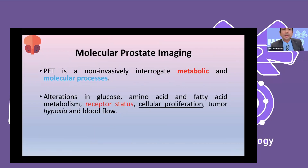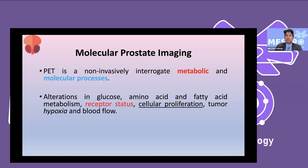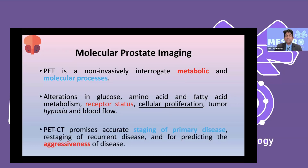Molecular prostate imaging is a non-invasive technique that integrates metabolic and molecular processes. It can exploit alterations in glucose metabolism using FDG, or review amino acid and fatty acid metabolism. Some radiopharmaceuticals reflect receptor status, cellular proliferation, tumor hypoxia, and blood flow — making molecular imaging very useful in primary staging, recurrent disease, and predicting aggressiveness.